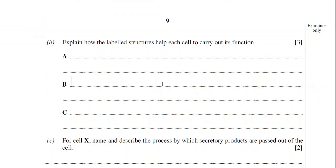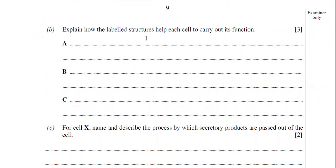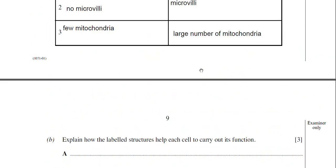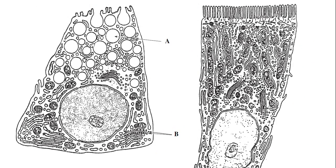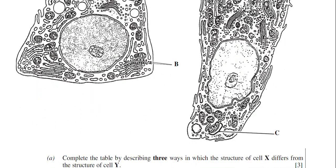Moving on then, part B. Explain how the labeled structures help each cell to carry out its function. So structure A of course is the vesicle. Structure B, be careful here. I think it's pretty much been well labeled. The examiner is pointing there to ribosomes. So the arrows do point to the ribosomes. And lastly then, C is a mitochondria there.